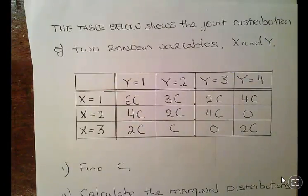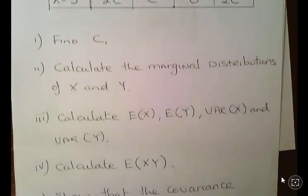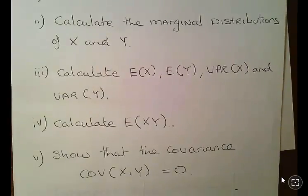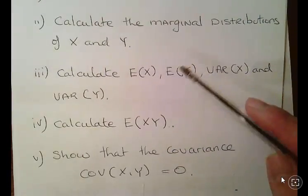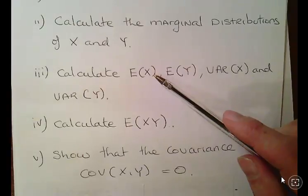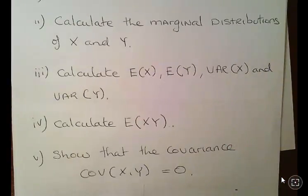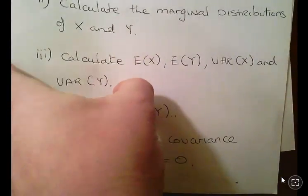In the last video we calculated the expected values of X and Y. What we are going to do now is calculate the expected value of X times Y, and the covariance of X and Y, and show that it is 0. From the last video I calculated the expected value of X and the expected value of Y, and I'll drop those in when the time comes.